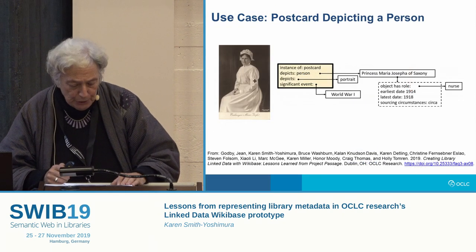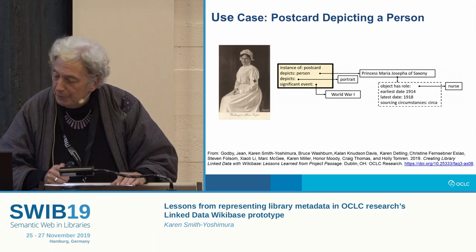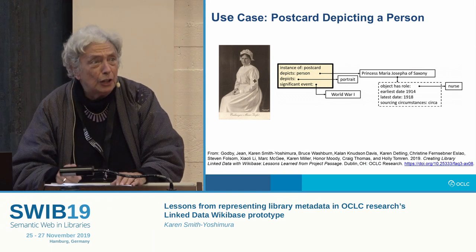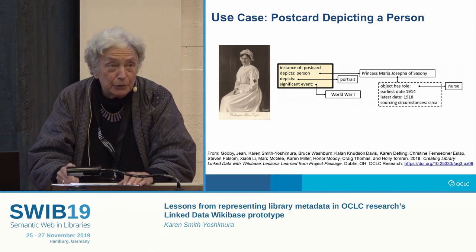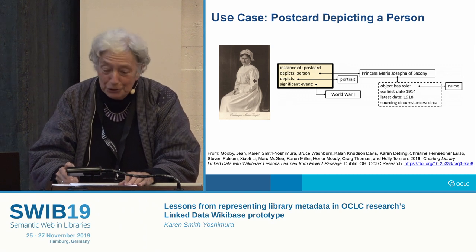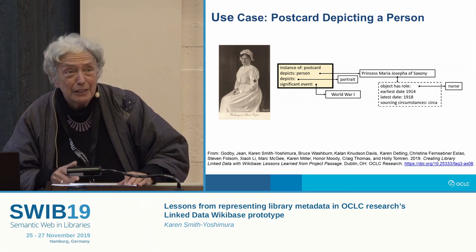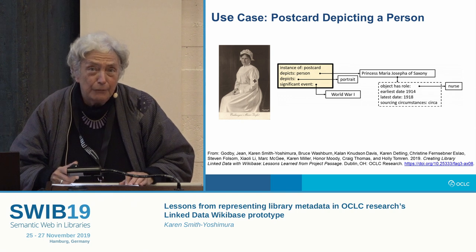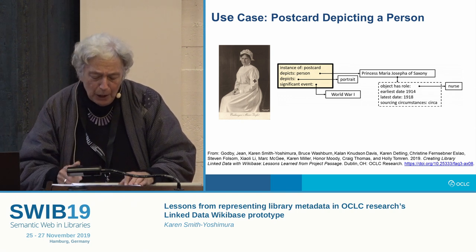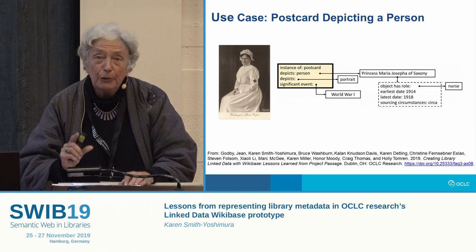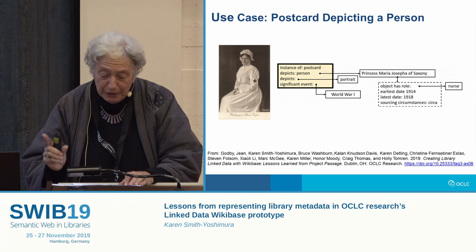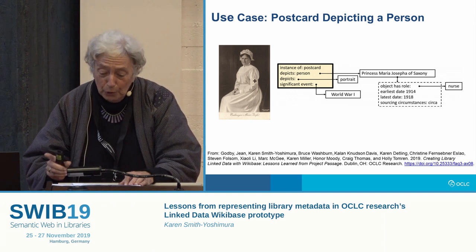The schematic shown here shows the Wikibase entities for the content relationships in the postcard depicting Princess Maria Josefa of Saxony, the sister-in-law of Franz Ferdinand, the Archduke of Austria, whose assassination in Sarajevo in 1914 sparked World War I. It illustrates how we can specify a temporary role during a specific time period, as she served as a nurse only during World War I. The object described in Wikibase is actually the postcard depicting a person.